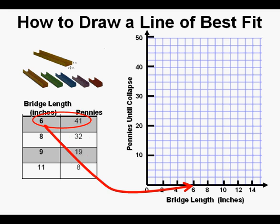We plot our first point by going to 6 on the bridge length or horizontal axis, then going up vertically from there. Then we go to 41 on the vertical axis and go to the right horizontally. Then we plot our point where the vertical and horizontal intersect. That's as close as I could get to it.